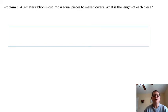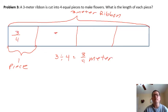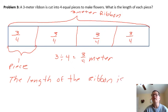Problem three. This one, instead of gravel this time, we have a three-meter ribbon. This says we're going to cut into four equal pieces to make flowers. Each one of these sections is one piece. We have three meters divided by four pieces, which equals three-fourths of a meter. So each one of these is three-fourths. The length of the ribbon is three-fourths of a meter.